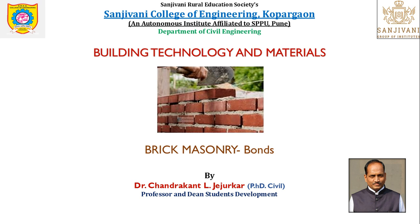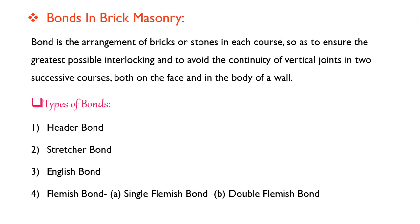Welcome to the lecture on brick masonry. In today's video we shall discuss various types of bonds which are used in brick masonry. First, we shall discuss what is bond in brick masonry. Bond is the arrangement of bricks or stones in each course so as to ensure the greatest possible interlocking and to avoid the continuity of vertical joints in two successive courses, both on the face and in the body of the wall.